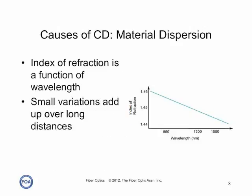Material dispersion is caused by the variation of the index of refraction of the glass in the core of the fiber as a function of wavelength. Looking at the graph, you can see the variation of the index of refraction over the entire spectrum covered by fiber optics may seem small — only a few percent — but when dealing with very high speed pulses over very long distances, it can add up.